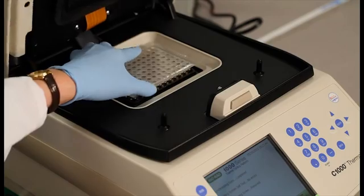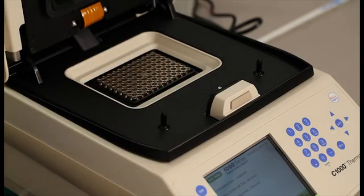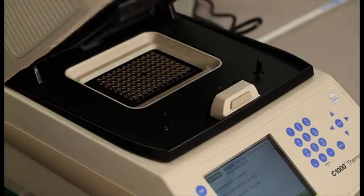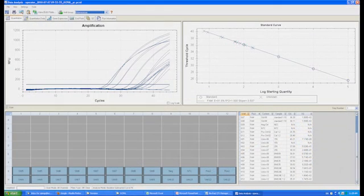When the run is finished, remove the 96-well plate from the thermocycler and discard without disturbing the seal. Export the data from the thermocycler to the pre-prepared spreadsheet. You are now ready to calculate your results.